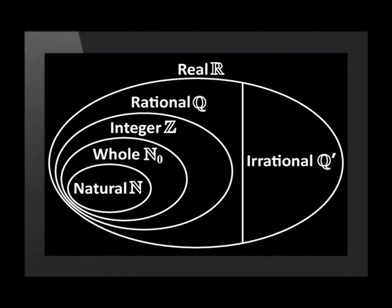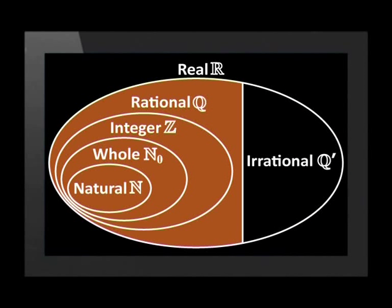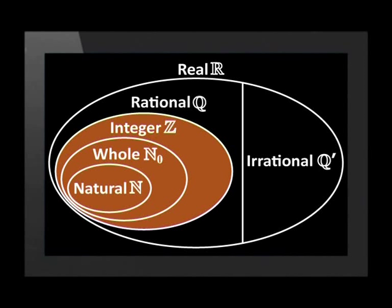The word 'real' means that these numbers exist. Calculations can be done with a set of numbers that are called imaginary, but we don't cover that in our high school curriculum. The real number system is divided into two main parts: rational and irrational numbers. Within rational numbers we have natural numbers, whole numbers, and integers.